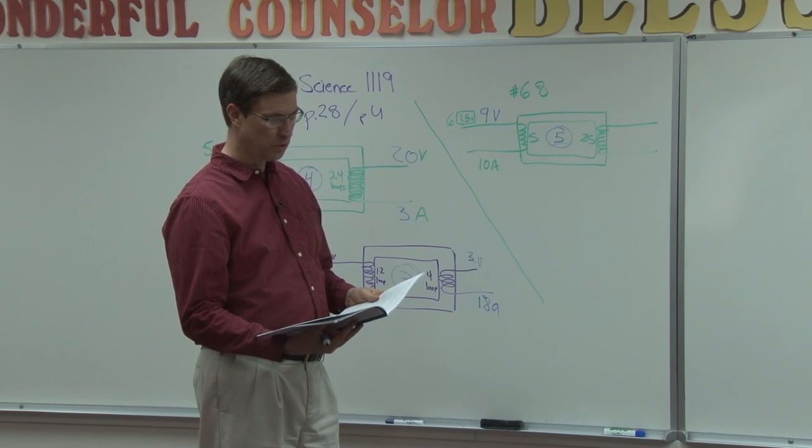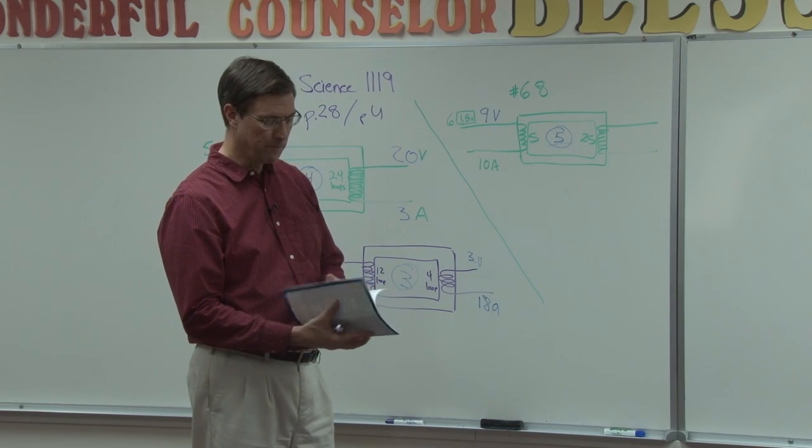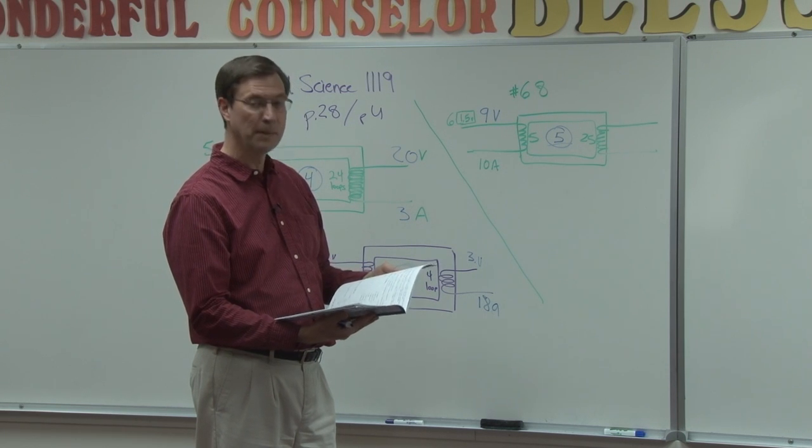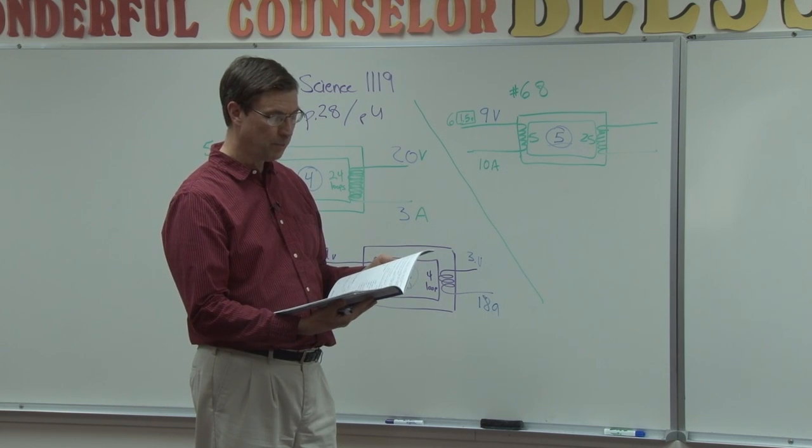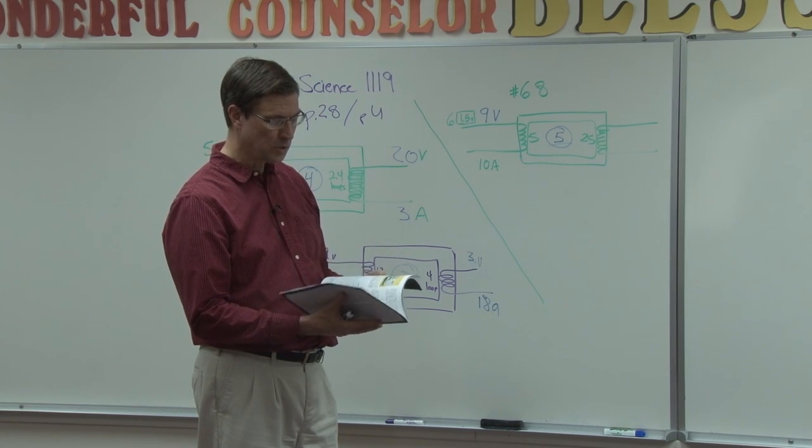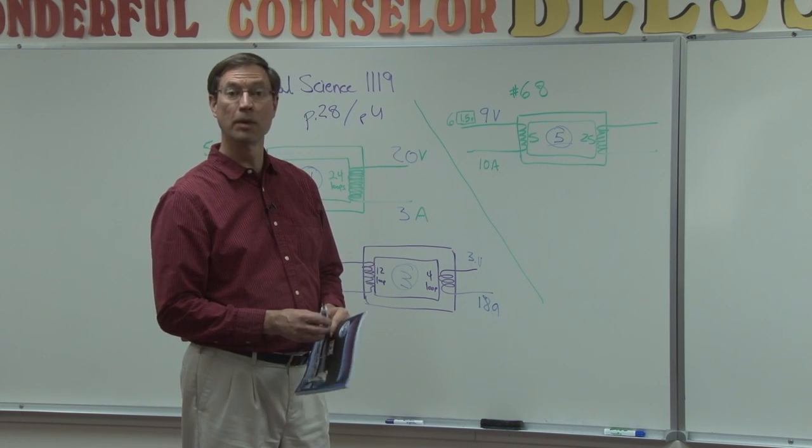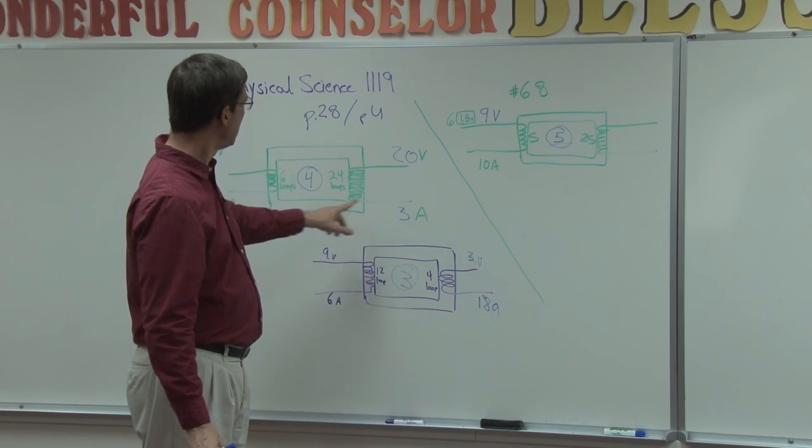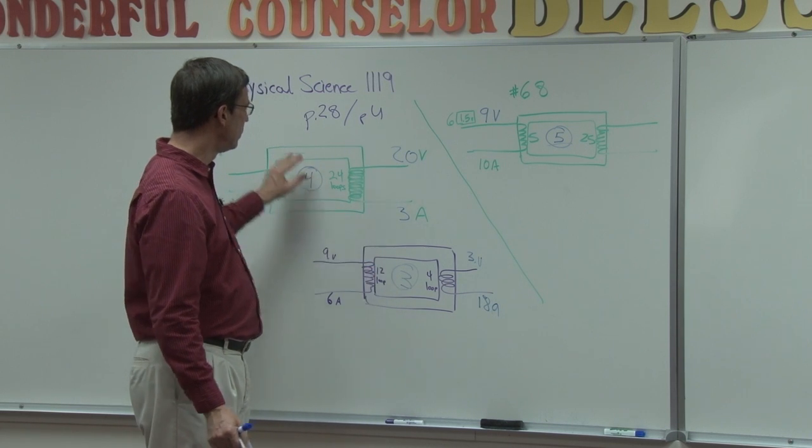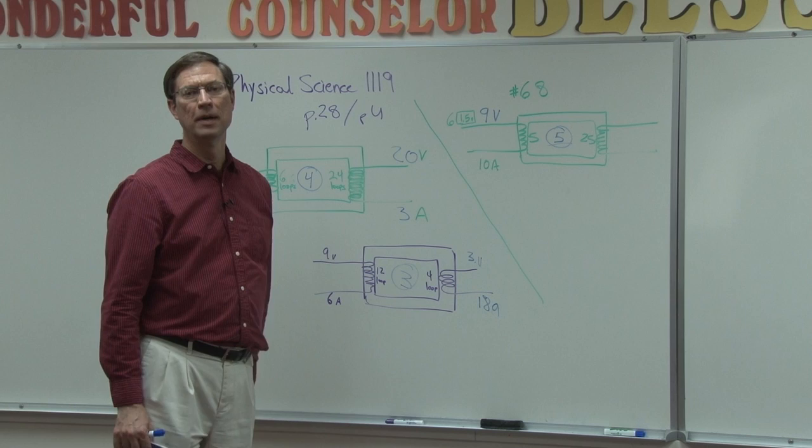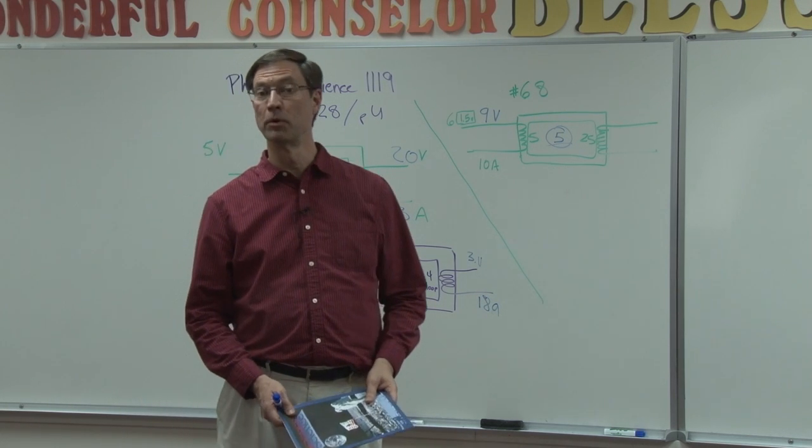But once you understand that, then when you get to the checkup on page X, there is a problem very similar to this. There's another one on the self-test just like this. And again on the pace test. So make sure you understand the difference between these types and how to use that factor, whether you're multiplying or whether you're dividing and which type of transformer it is by the number of coils.